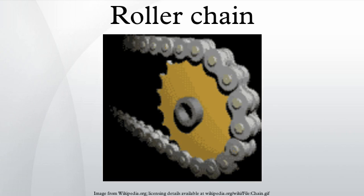Inner links alternate with the second type, the outer links, consisting of two outer plates held together by pins passing through the bushings of the inner links.